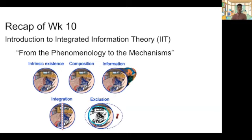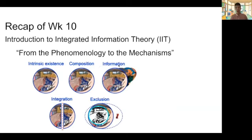First, a recap of week 10. There I introduced the theory of consciousness called the Integrated Information Theory, or IIT. The logic of this theory is, as the title of the paper says, it is from the phenomenology to the mechanism, which is a different kind of approach from other theories such as Global Neural Workspace Theory. Rather than tackling the hard problem of consciousness by building up from what we know about the brain, we first try to identify the properties of the phenomenology — conscious phenomenology — and then deduce what kind of neural mechanisms can support such properties.